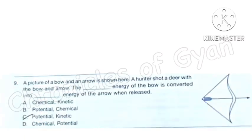Question 9: A picture of bow and arrow is shown here. A hunter shot a deer with the bow and arrow. The dash energy of the bow is converted into dash energy of the arrow when released. Correct answer is option C: Potential and kinetic.